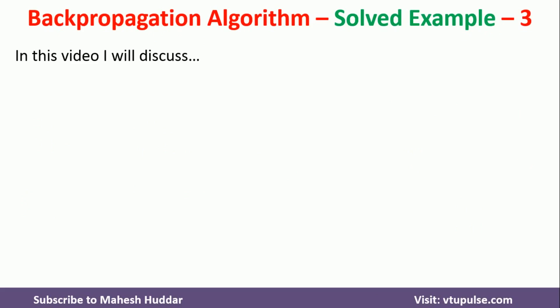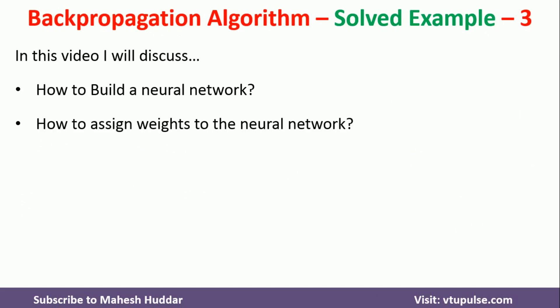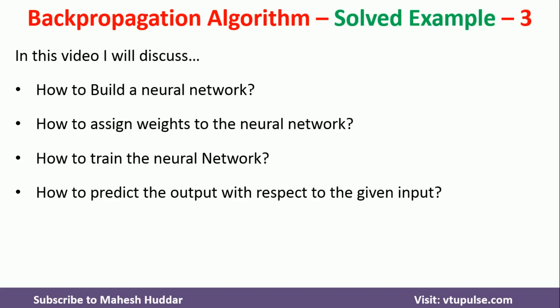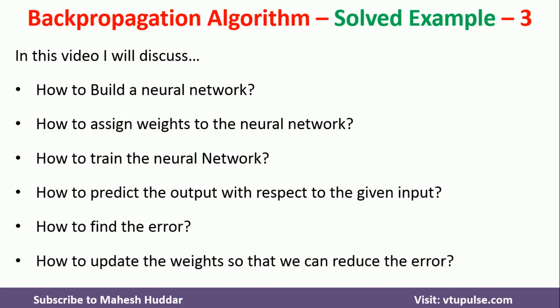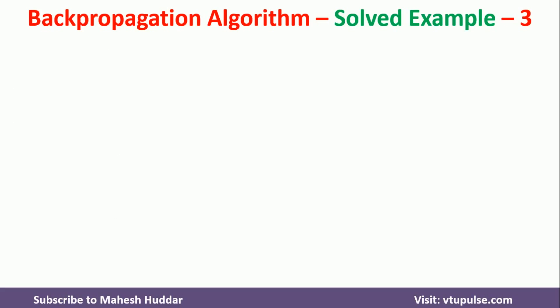The contents of the video are: first we will try to understand how to build a neural network, then how to assign weights to the neural network, then we will train the neural network. Once trained, we will predict the output with respect to given input. Based on the output, we will try to find out the error. If the error is acceptable, we will stop. Otherwise, we will try to update the weights to reduce the error. First, we will understand the different components of a neural network.